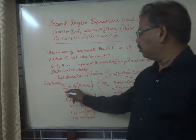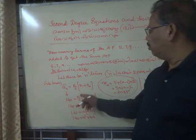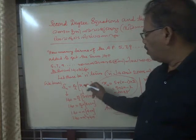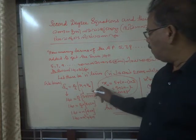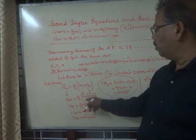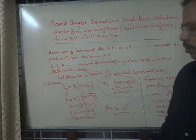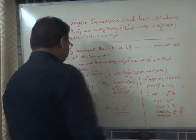Now Sn is given, 140 is equal to n by 2 into a1 plus an. a1 is 5 and an is 2n plus 3.